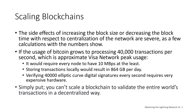Verifying 40,000 elliptic curve digital signatures per second — part of the validation process — would also be extremely challenging, making the initial block download of the Bitcoin blockchain almost impossible without extremely expensive hardware. While 40,000 transactions per second seems like a lot, that would only enable Bitcoin to achieve parity with traditional payment systems like Visa at peak times. Innovations in machine-to-machine payments, microtransactions, and other applications might push demand several orders of magnitude higher. Simply put, you can't scale the Bitcoin blockchain to validate the entire world's transactions in a decentralized way.